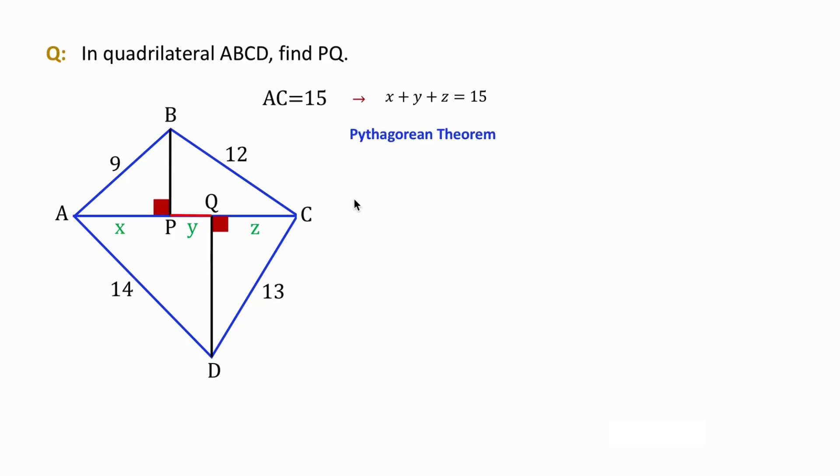Let's apply the Pythagorean theorem step by step to find each segment and finally determine PQ. As you know, the theorem states that in a right triangle, the square of the hypotenuse, like AB, equals the sum of the squares of the other two sides, square of AP plus the square of BP in this ABP right triangle.